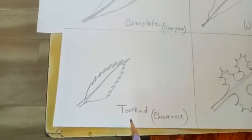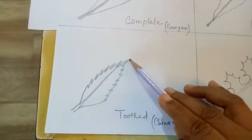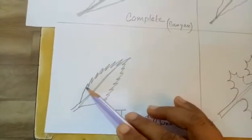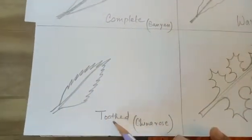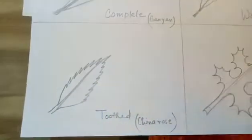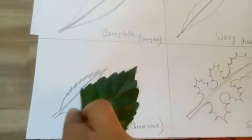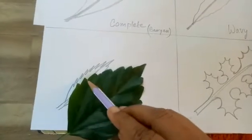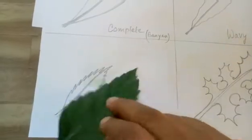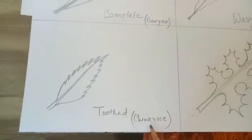The next one you come, toothed. Toothed means the margin will look like it has teeth. See here, you can see it is looking like it has teeth. That's why the name is toothed. It is also called serrated. See, I have brought one leaf like that. That is china rose. See, you can see the teeth here. This type of margin is called toothed margin and the type of leaf is also called toothed. Example, china rose.